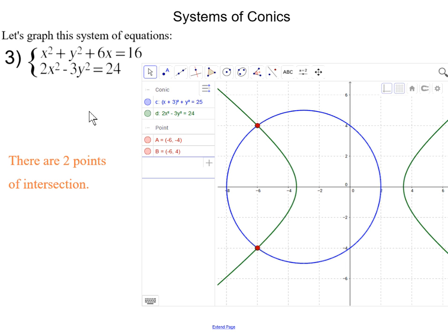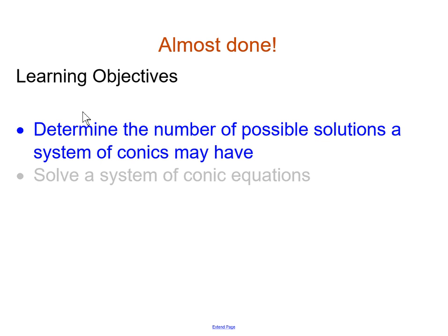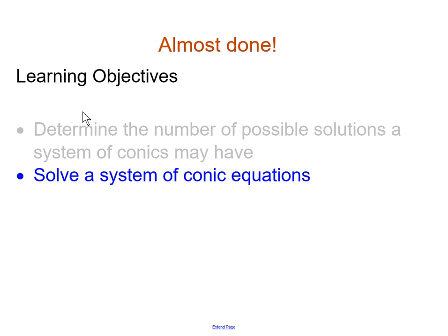Before wrapping up, I want to leave you with a question: what's the difference between solving systems of conics and systems of linear equations? Are there similarities and differences? Also, how would solving systems of conics change if we were solving more than two conic equations? To review our learning objectives: we determined the number of possible solutions by sketching and graphing, and we solved systems of conic equations using elimination and substitution.